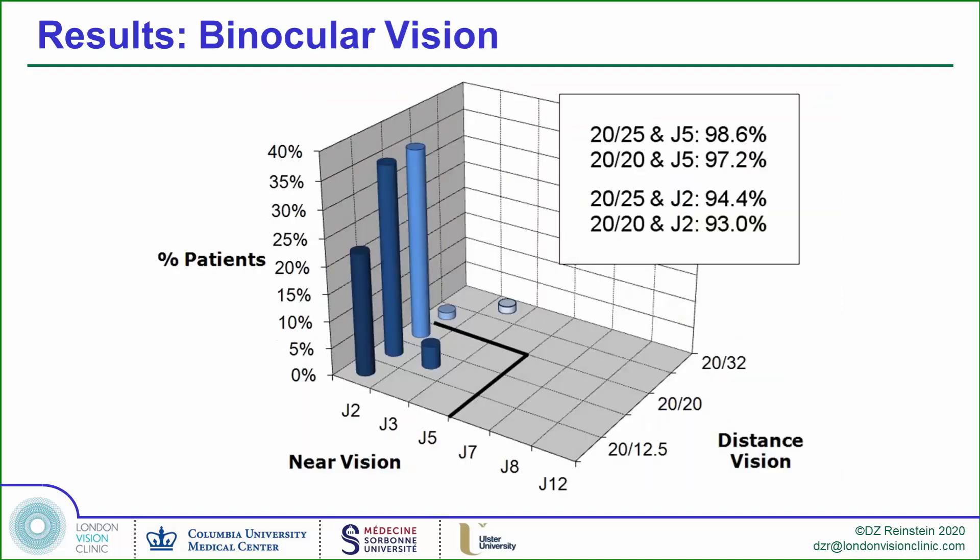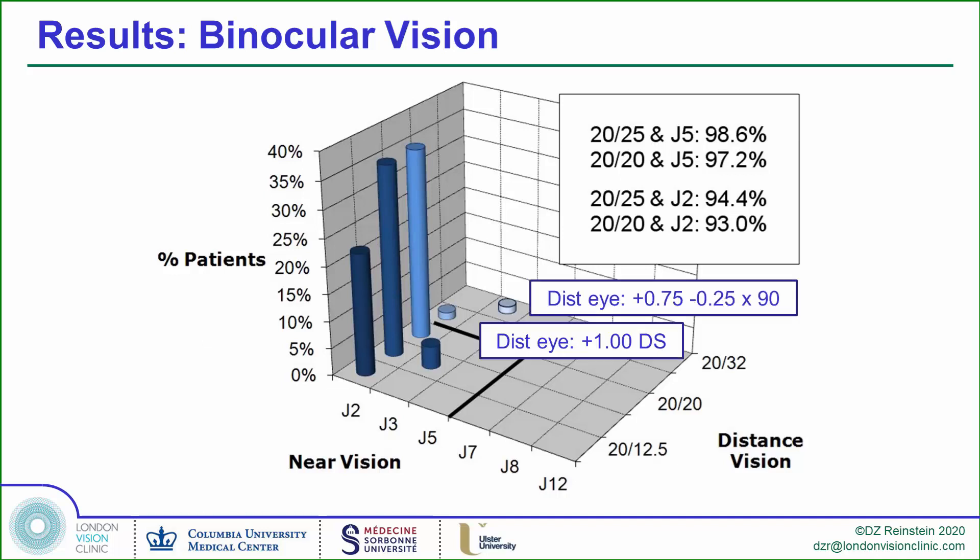This three-dimensional representation of post-op distance and near vision shows that out of 71 patients, only two were outside the 20/20 J3 bracket. Both of those distance eyes would be easily enhanced onto target.